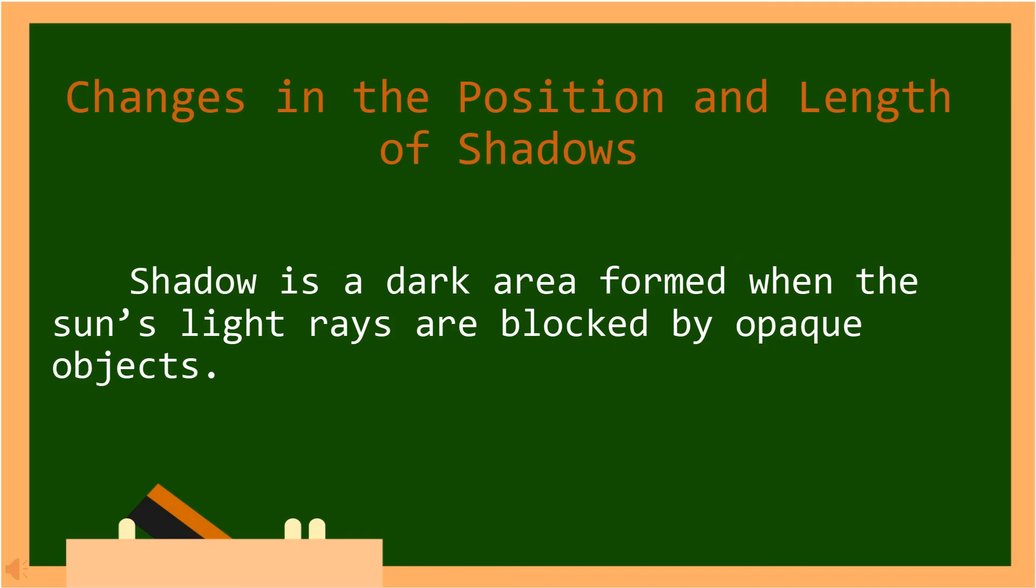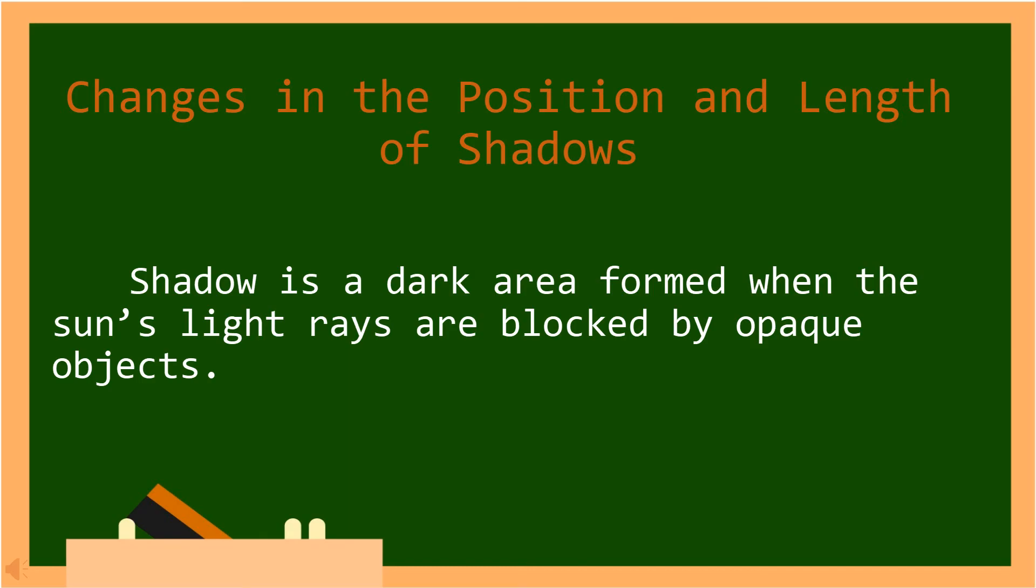Shadow is a dark area formed when the sun's light rays are blocked by opaque objects. In Tagalog, ang anino ay isang madilim na lugar na nabuo o nabubuo kapag ang mga ilaw ng sinag ng araw ay nangaharang ng mga opaque na bagay.